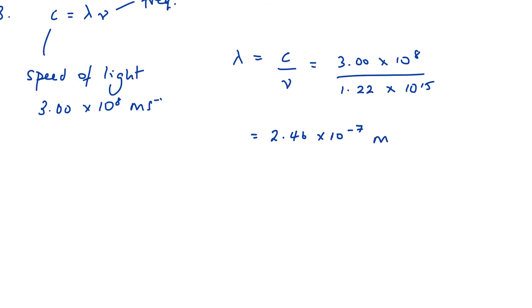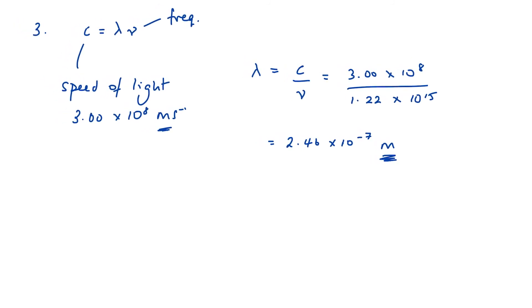Now at this point, my units are in meters because the speed of light was given in meters per second. Now you are expected to know that one nanometer equals 10⁻⁹ meters, so if I want my answer in nanometers, I'm going to have to multiply by 10⁹. And when I do that, it comes out at 246 nanometers.